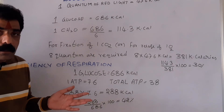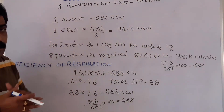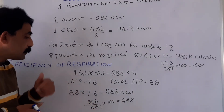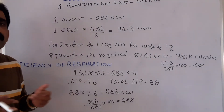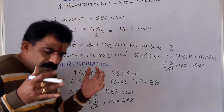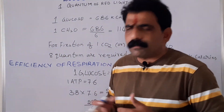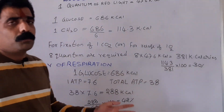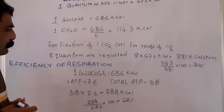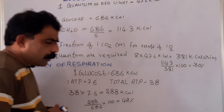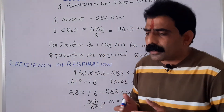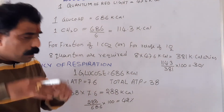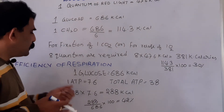To get the percentage of energy captured into ATPs out of the total energy, divide 288 by 686 and multiply by 100. That gives 42%. Efficiency of respiration is 42%. This means that of the total potential energy content of the glucose molecule, only 42% itself is captured into the ATPs. That is said to be the efficiency of respiration.